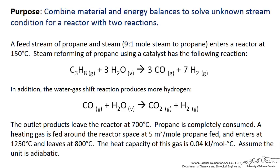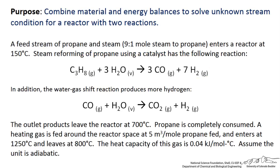For that process we have two relevant reactions. First, propane reacts with steam to form carbon monoxide and hydrogen. Secondly, within the reactor we have the water gas shift reaction, which takes carbon monoxide and reacts with steam to produce carbon dioxide and more hydrogen.